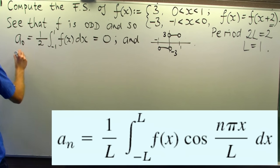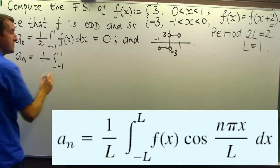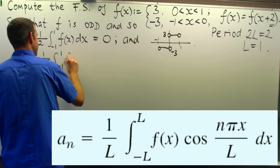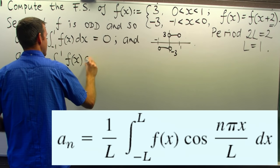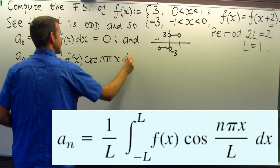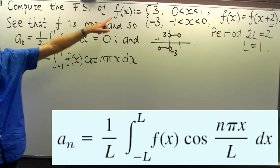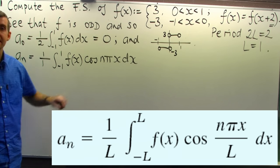What about a sub n for n greater than or equal to 1? Well, applying the formula with big L equals 1, we want to integrate this. But look closely, f is an odd function. Cos is an even function.